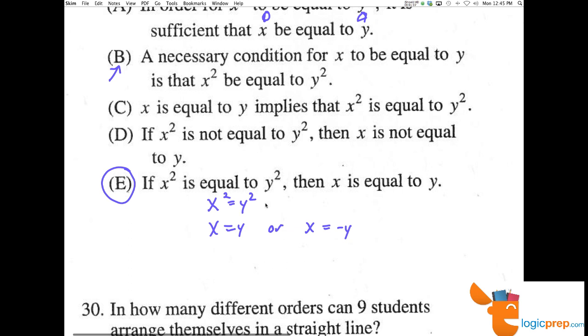So either of these cases are true given this information, so we can't infer that x is equal to y, making E the correct answer choice because we didn't have any additional information like this.